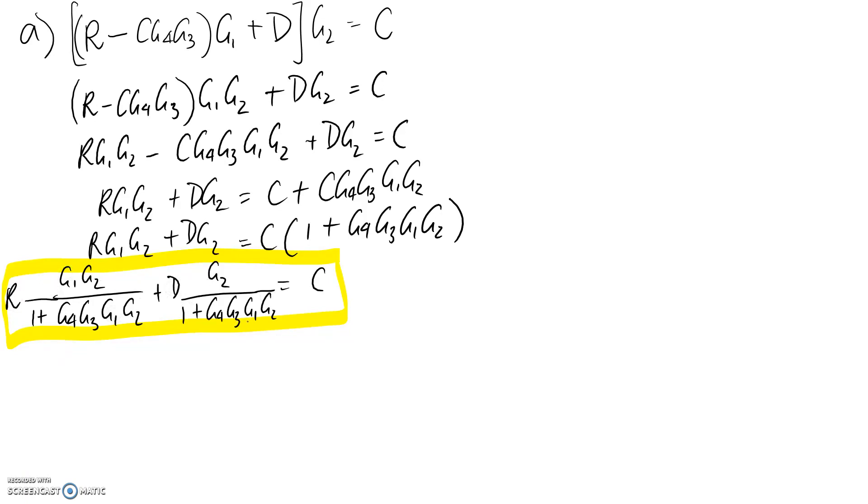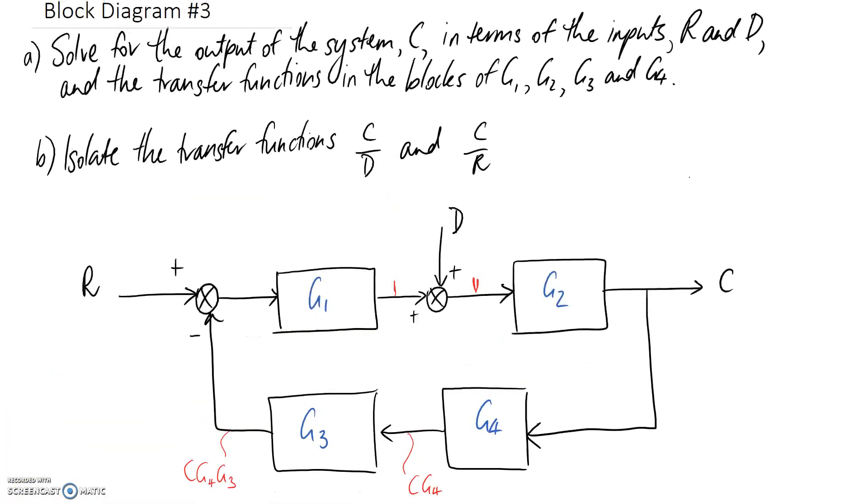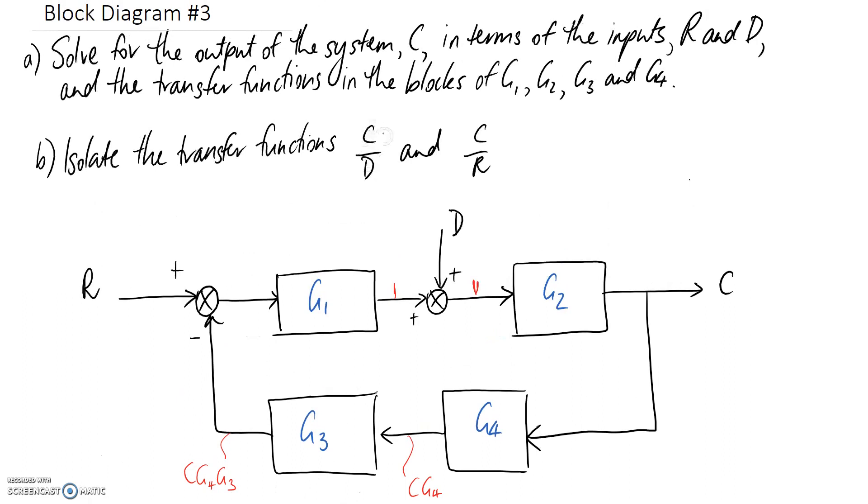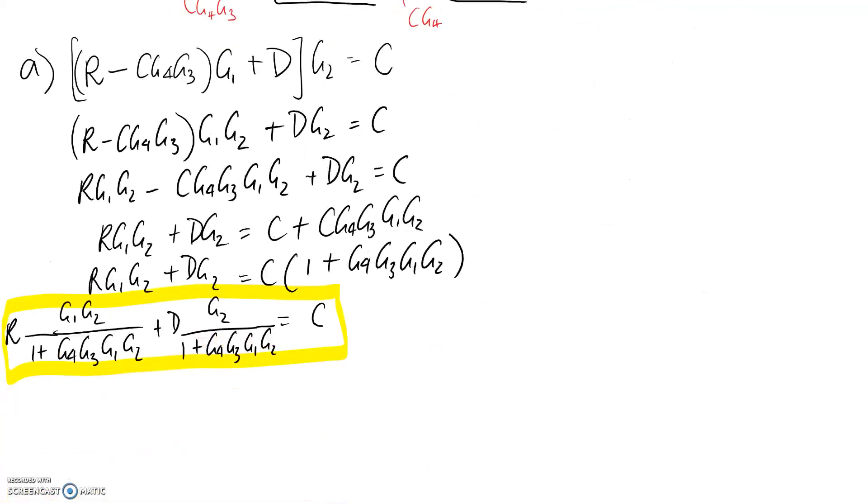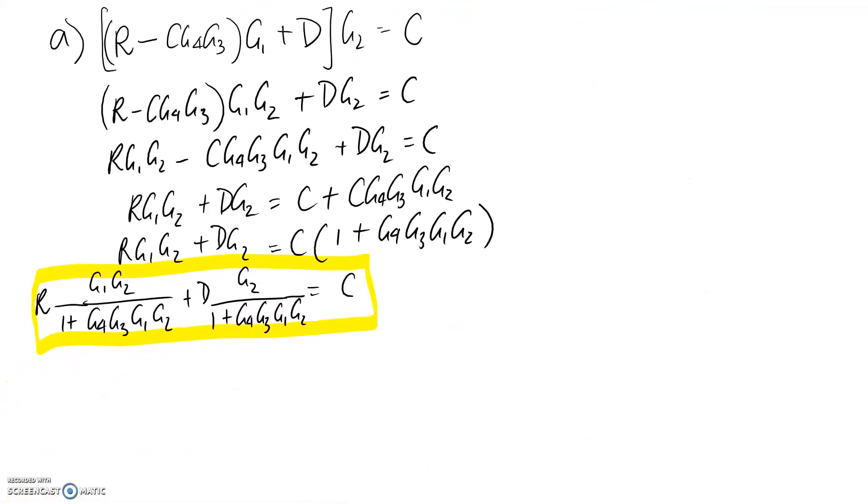Part B now was to isolate the transfer functions so that we just get C on D and C on R. If we look at what we've got in part A, we're not really able to just solve those transfer functions straight up because we have two inputs to our system, the R and the D.